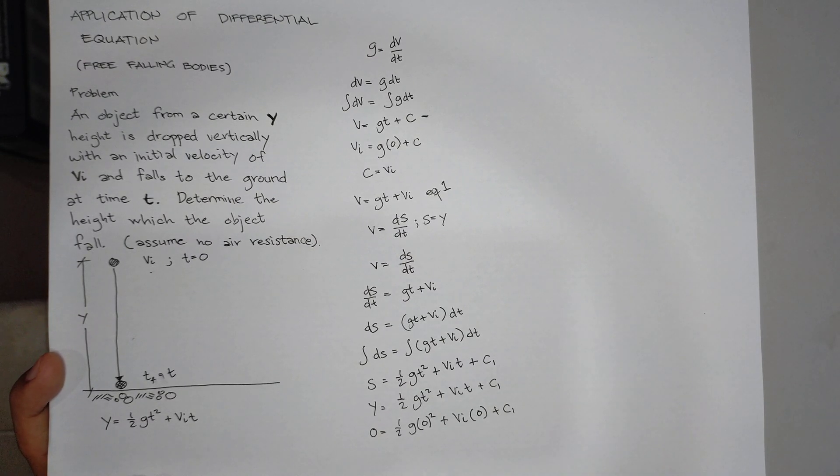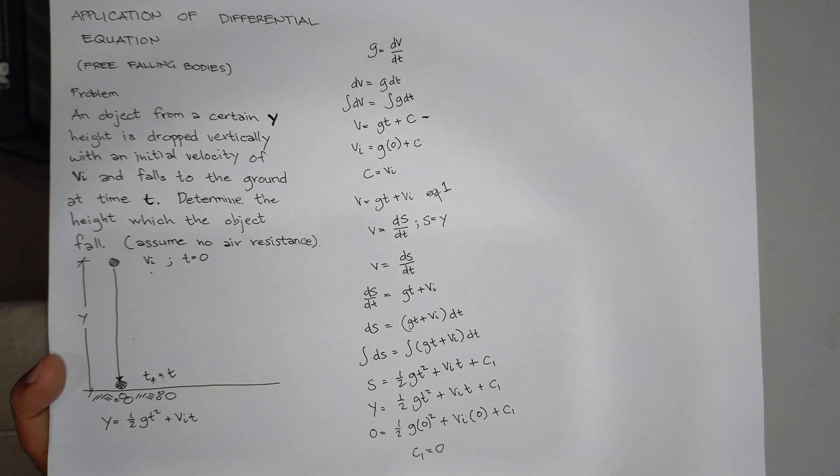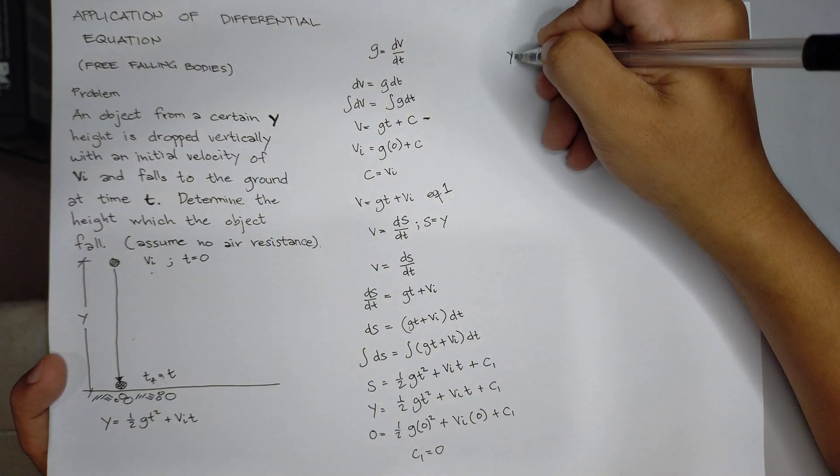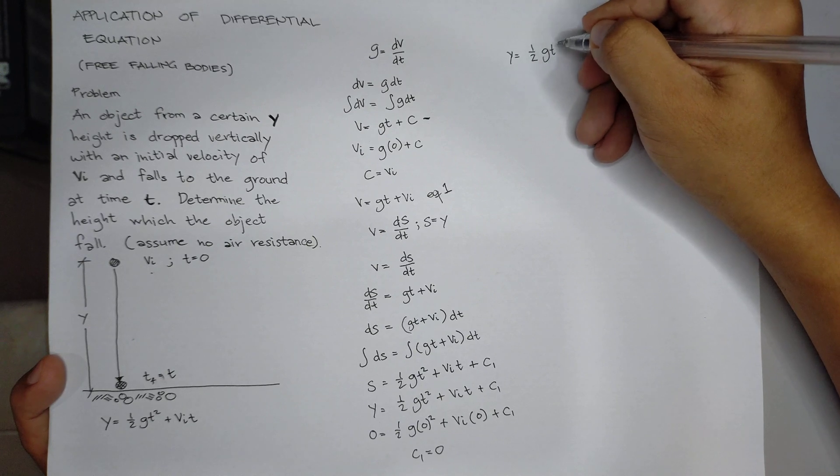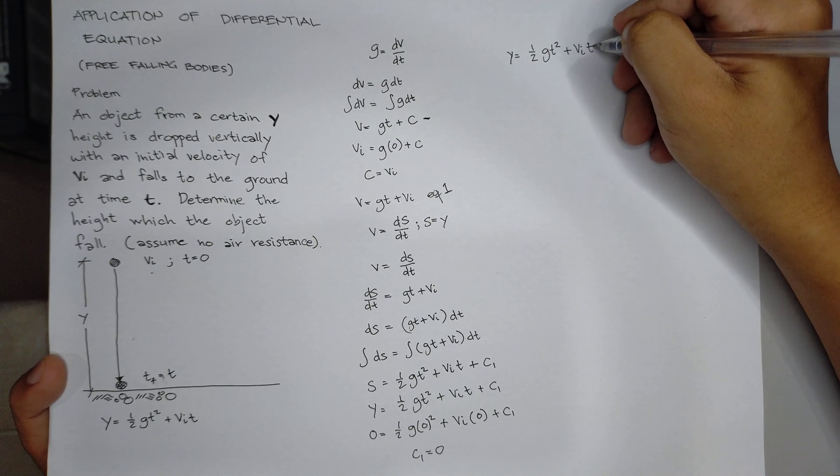Therefore, c1 is 0. Thus, our height y is equal to 1/2 g t² plus vi times dt, where y is the height at any given time t.